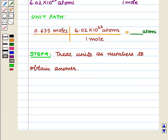The next step is to treat units as numbers to obtain answer. For this we cancel the units and terms so that we are left only with the desired units.